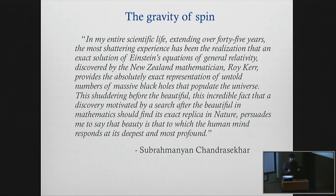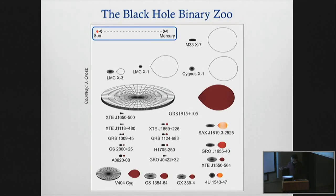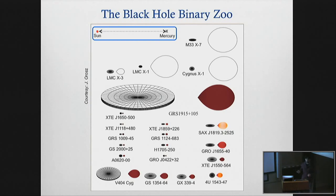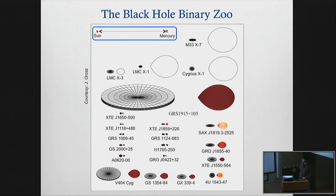The masses and spins of black holes are for me the name of the game. This is a road map of the 25-odd stellar mass black hole systems that we know about, predominantly in our galaxy, for which we have dynamical information about the masses. There aren't a whole lot of systems, but every year or two another one goes off, so the population grows slowly over time. We have a couple dozen of these systems.